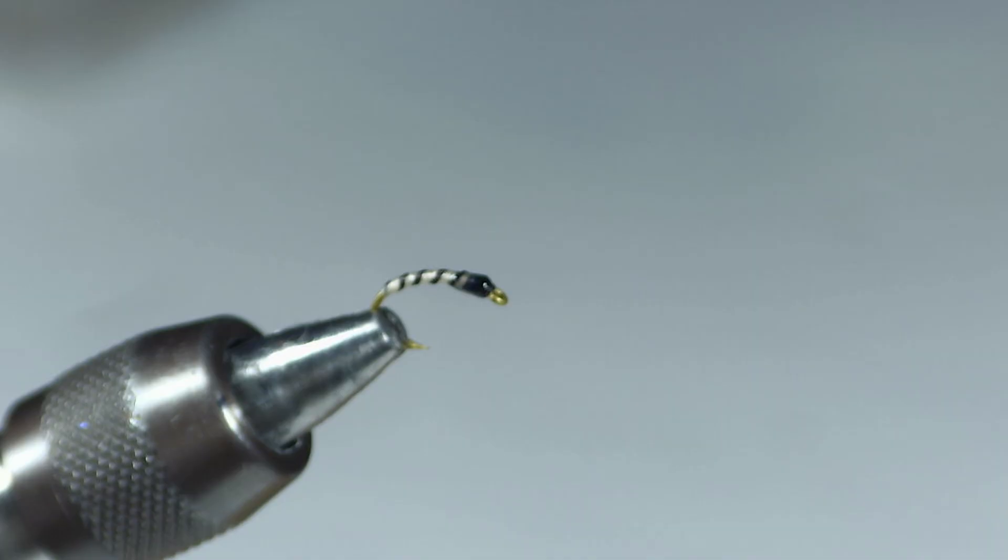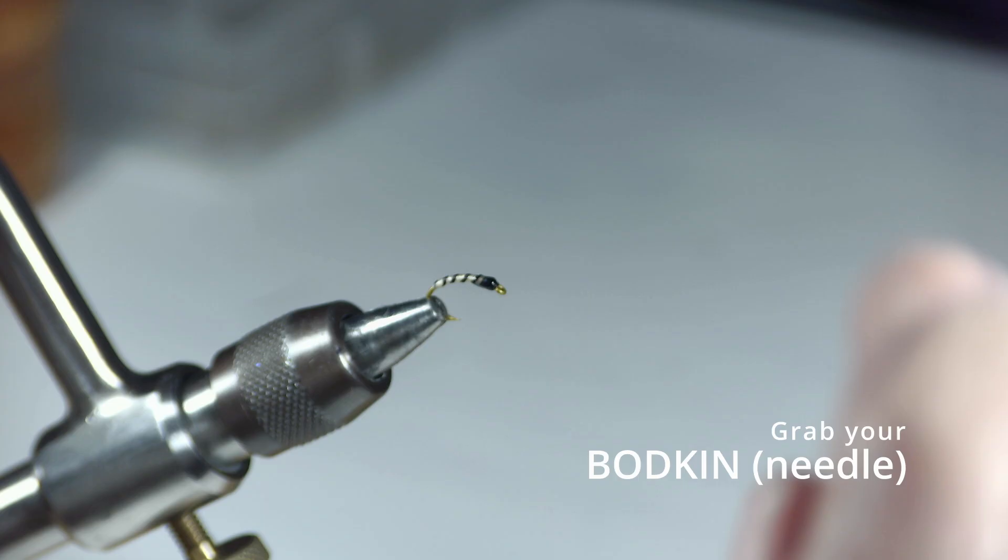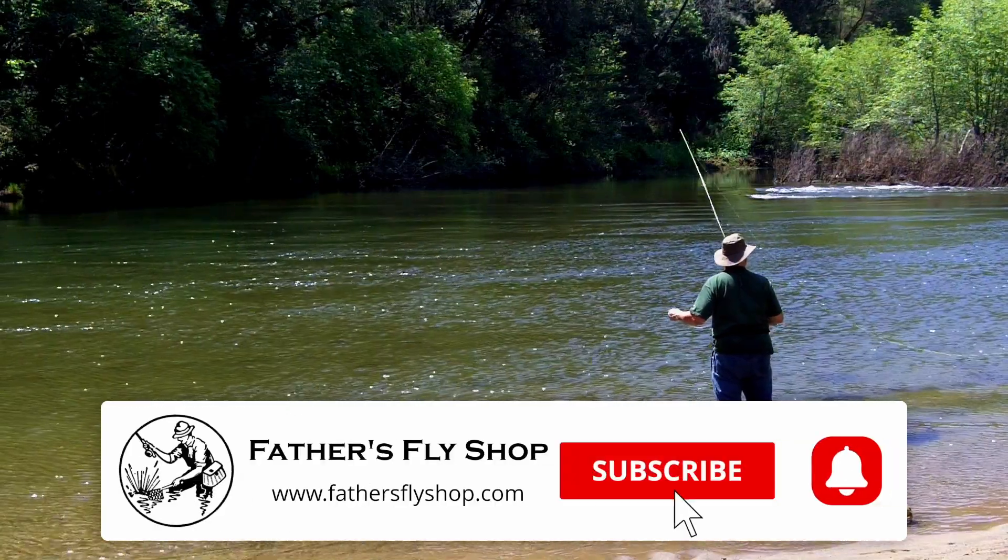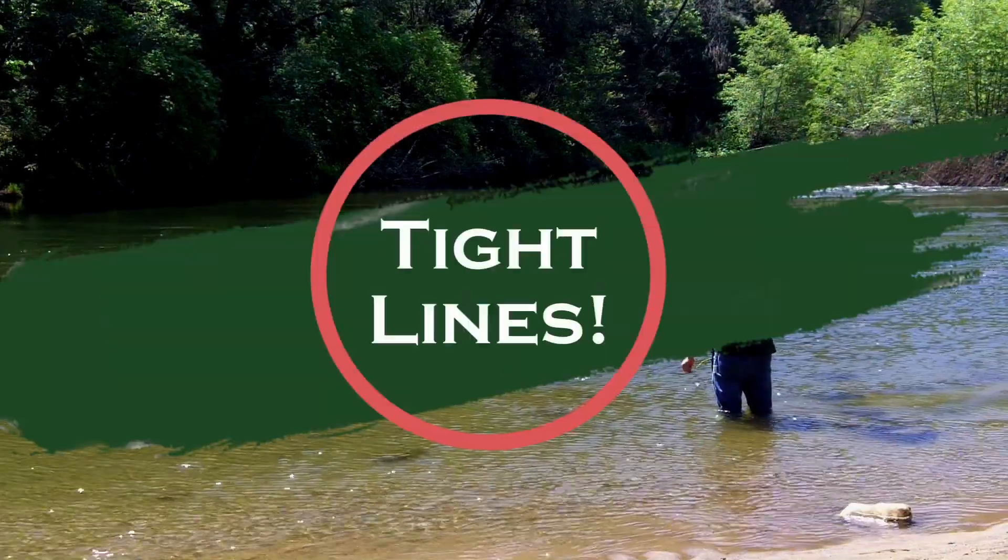If you think you got a little too much, grab your bobbin and just touch it with your bobbin, take it off like this. So that's a thread midge. Thank you for watching. Subscribe for all our videos, and tight lines.